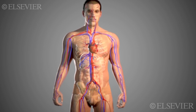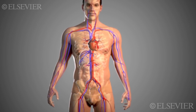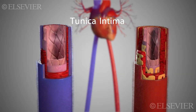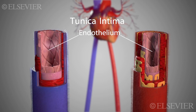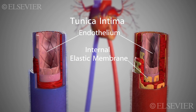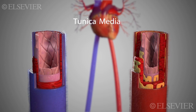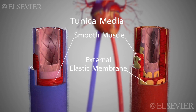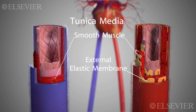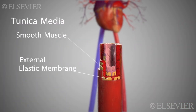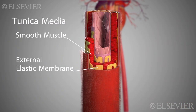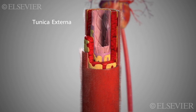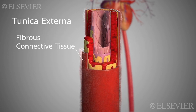Three basic layers make up the walls of arteries and veins. The tunica intima is the innermost layer, consisting of a single layer of endothelium and sometimes an internal elastic membrane. The tunica media is the middle layer and consists of smooth muscle and sometimes an external elastic membrane. The tunica media is much thicker in arteries than in veins. The tunica externa consists of fibrous connective tissue.